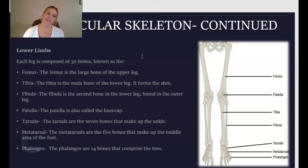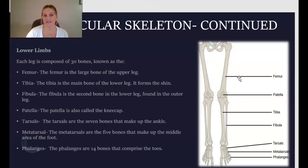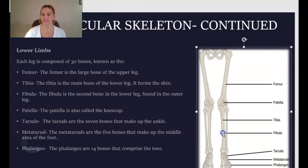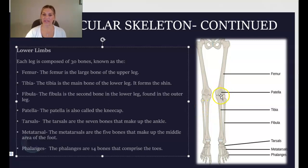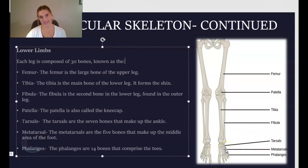Continuing with the appendicular skeleton, we have the lower limbs or legs. Each leg is composed of 30 bones. You have the femur — the long, large bone of the leg — the tibia, the main bone of the lower leg, otherwise known as the shin bone, and the fibula, the second bone of the lower leg found on the outside lateral side. Then you have the patella, which is your kneecap, the tarsals — seven bones that make up the ankle — the metatarsals — five bones that make up the middle area of the foot — and the phalanges — 14 bones comprising the toes.